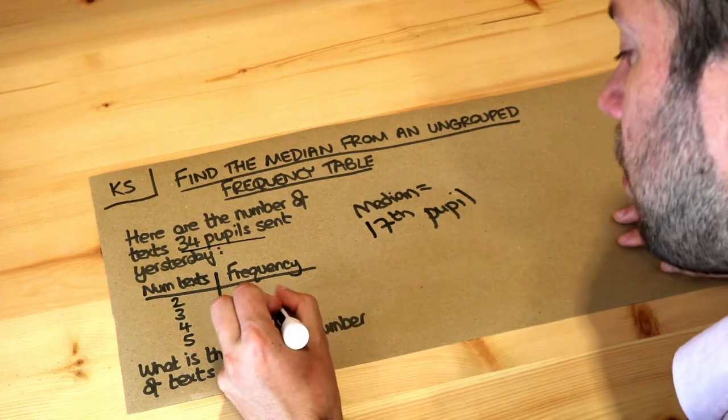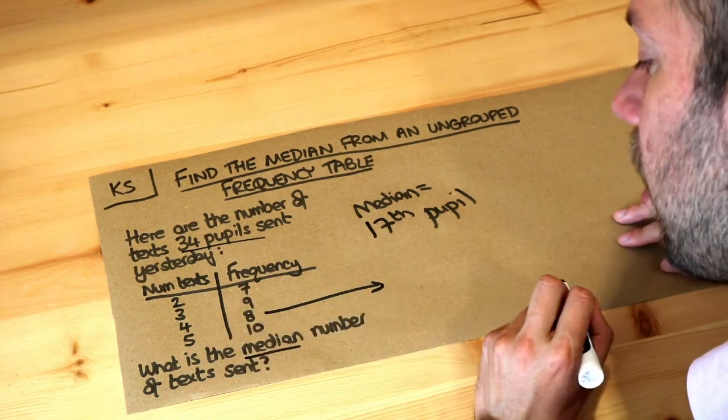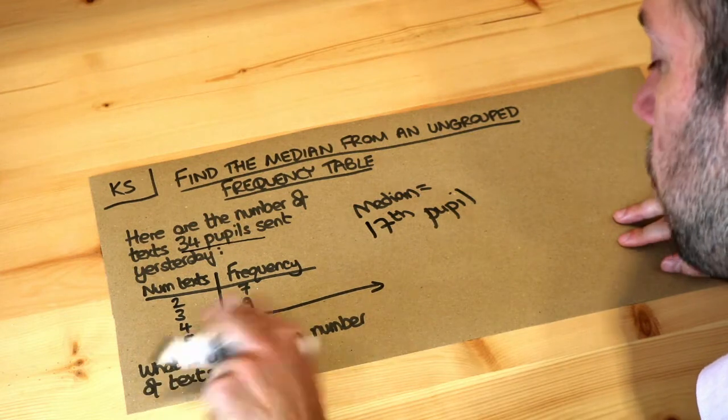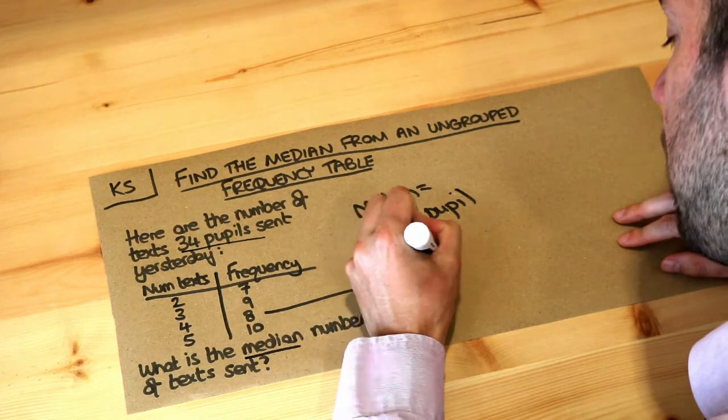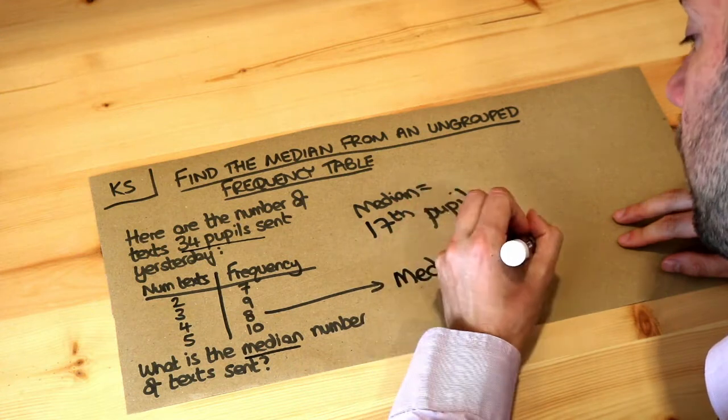So that 17th people must occur in the next category here, which is four texts. So therefore the median is equal to four texts.